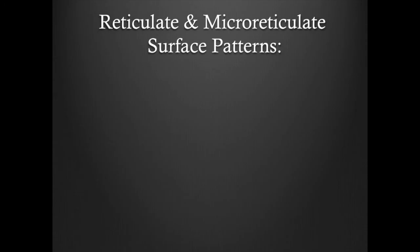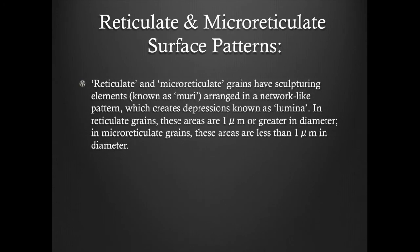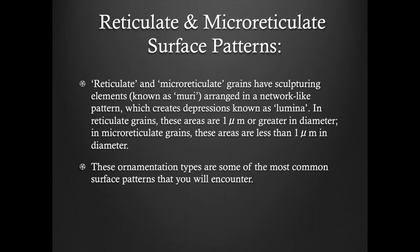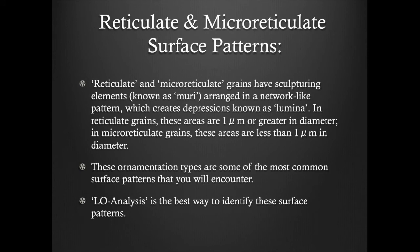Reticulate and micro-reticulate surface patterns. Reticulate and micro-reticulate grains have sculpturing elements known as muri arranged in a network-like pattern, which creates depressions known as lumina. In reticulate grains, these areas are one micrometer or greater in diameter. In micro-reticulate grains, these areas are less than one micrometer in diameter. These ornamentation types are some of the most common surface patterns that you will encounter. LO analysis is the best way to identify these surface patterns.